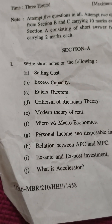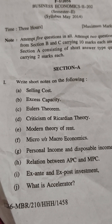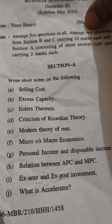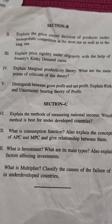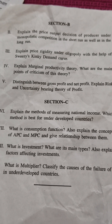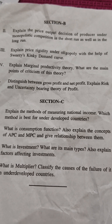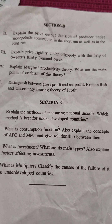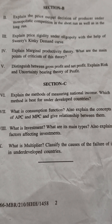Then we will discuss another paper. Here we have a short question section. You can see that there are a lot of repetitive topics, so note all these questions. There are also long questions. You can see that monopolistic competition appears repeatedly, so you have to do that chapter as well. Oligopoly is also important. This is the marginal productivity theory. What is gross profit and net profit — what is the difference between gross profit and net profit?